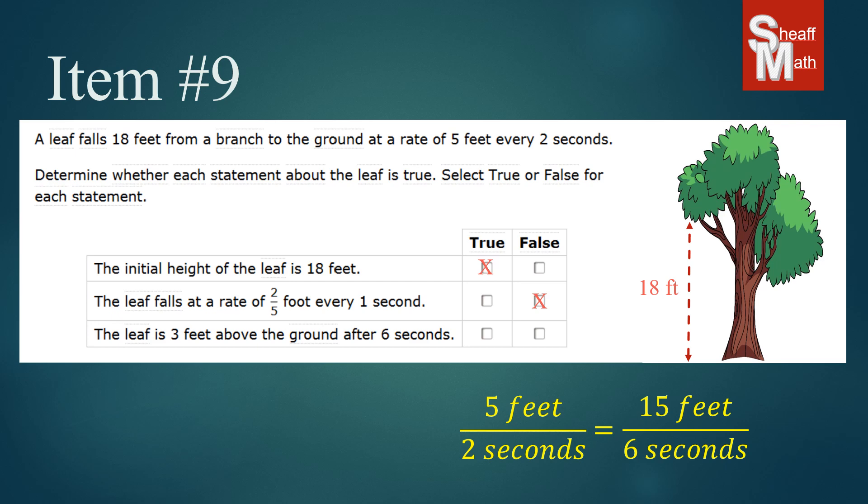So that means that that leaf dropped 15 feet in six seconds. And where are we at that point? We are three feet above because 18 minus 15 is three. And so our statement says the leaf is three feet above the ground after six seconds. That is a true statement.